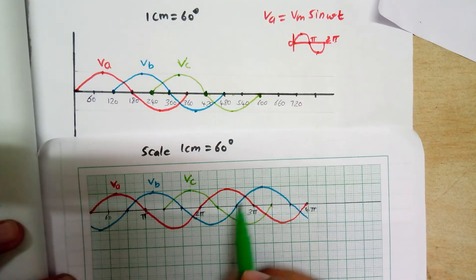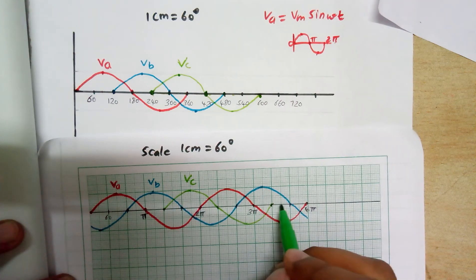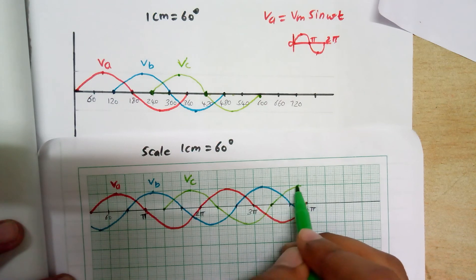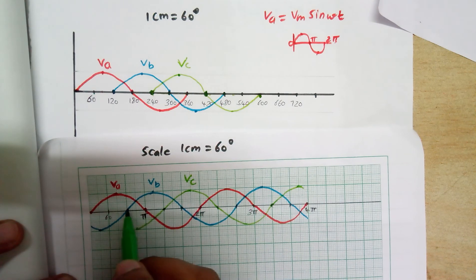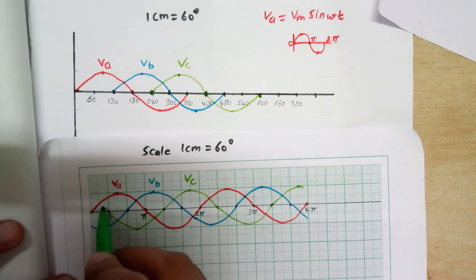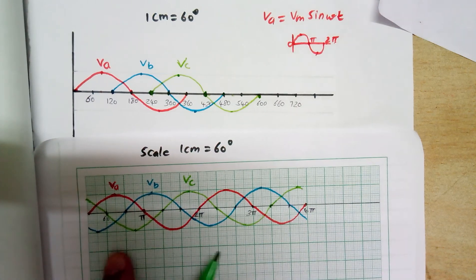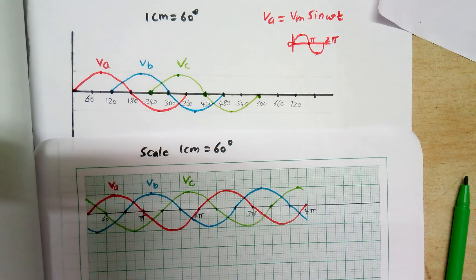Now Vc. The peak value is after 1.5 cm, and it conducts to the ending point. So this is our three-phase wave — the phase voltage graph. If you like this video, please click the like button, and please subscribe to my channel for more videos. Thank you.